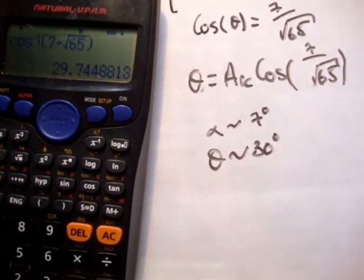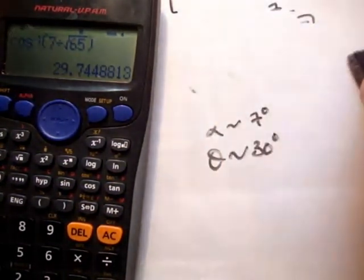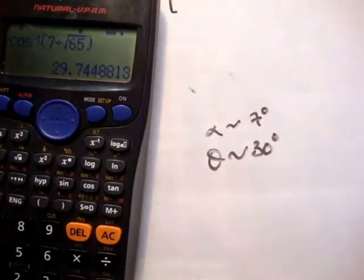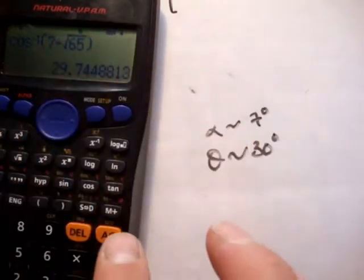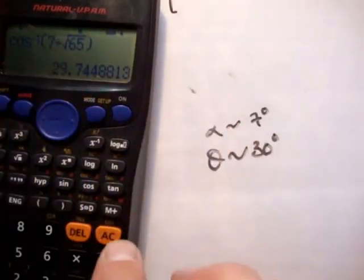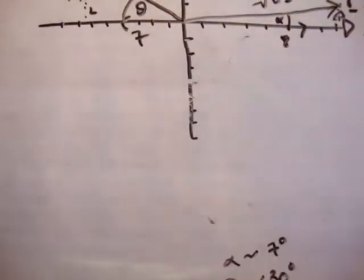I'm being very approximate here — obviously you can put down the full decimals if you want. We're asked to show that P and Q are of equal magnitude. We've done that because we've shown that both of them have a magnitude of root 65 in length.